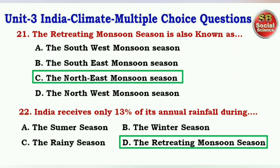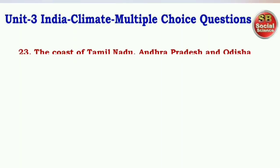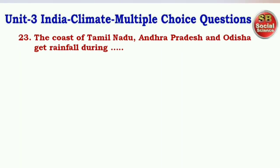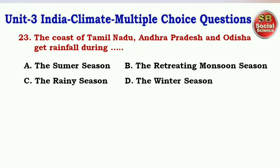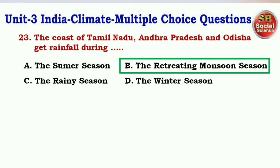Next question: The coast of Tamil Nadu, Andhra Pradesh and Odisha get rainfall during — options are the summer season, the retreating monsoon season, the rainy season, the winter season. The right answer is option B — the retreating monsoon season.